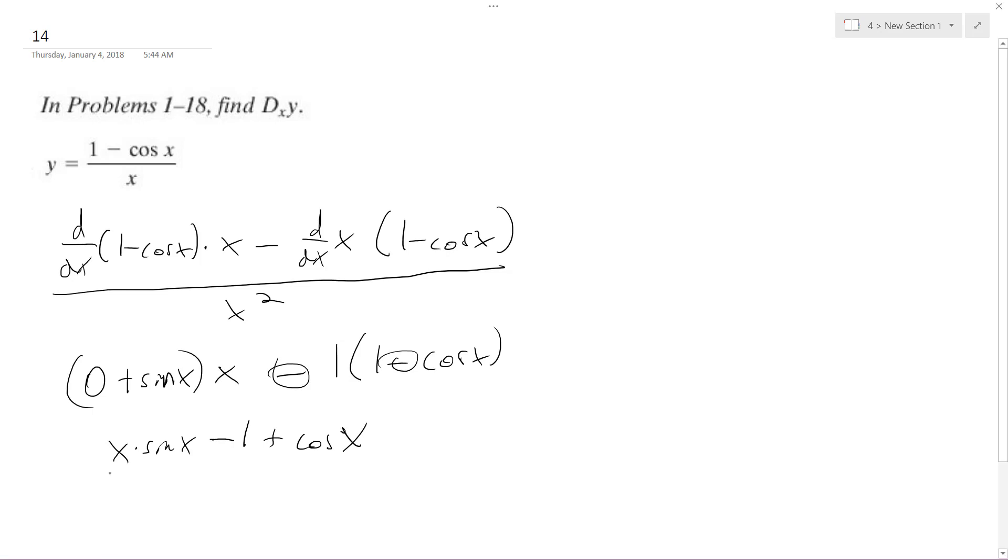So, and then all over x squared. So our final solution is going to be x sine of x plus cosine x minus 1, all over x squared. That's it. All right, I hope that helps. Thanks for watching.